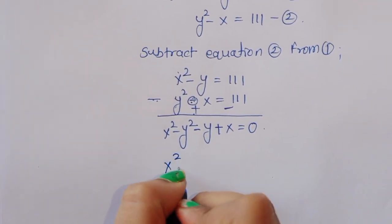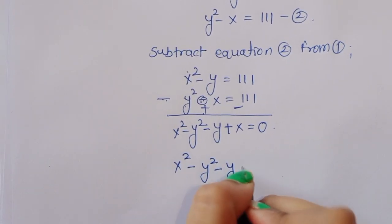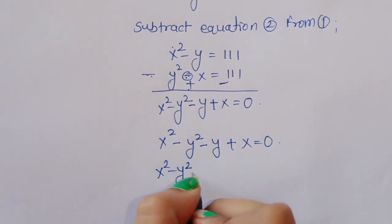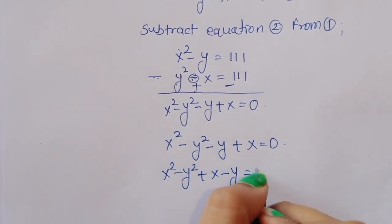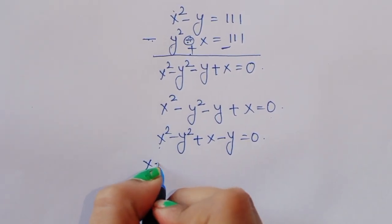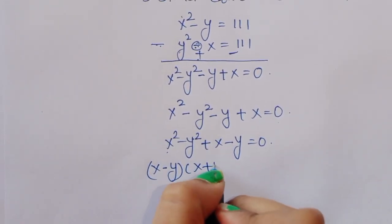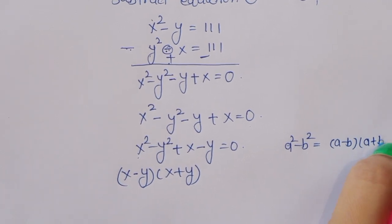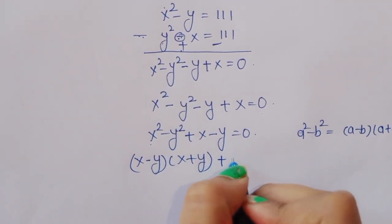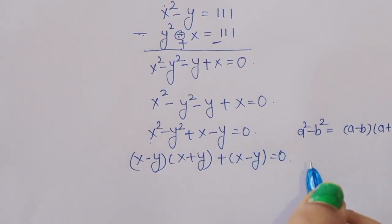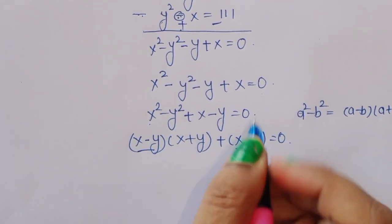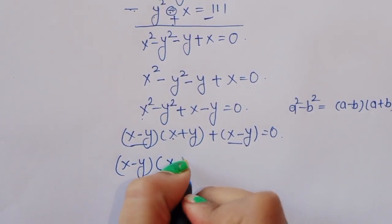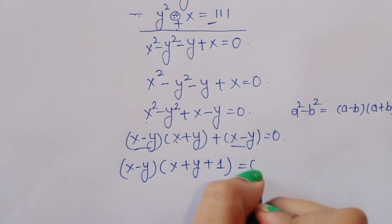So we can write this as x squared minus y squared plus x minus y equals 0. Now, x squared minus y squared can be written as (x minus y)(x plus y), using the formula a squared minus b squared equals (a minus b)(a plus b). So we have (x minus y)(x plus y) plus (x minus y) equals 0. We can factor out (x minus y), giving (x minus y)(x plus y + 1) equals 0.